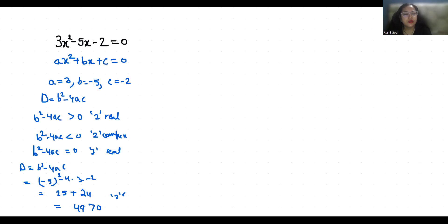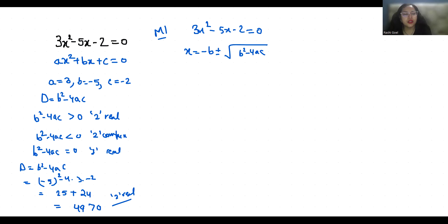So let's find the real roots. Method 1: for 3x squared minus 5x minus 2 equals 0, I am going to use the quadratic formula, which is x equals minus b plus or minus the square root of b squared minus 4ac, all divided by 2a. The value of b is minus 5, and we already found b squared minus 4ac equals 49, and 2a equals 6.